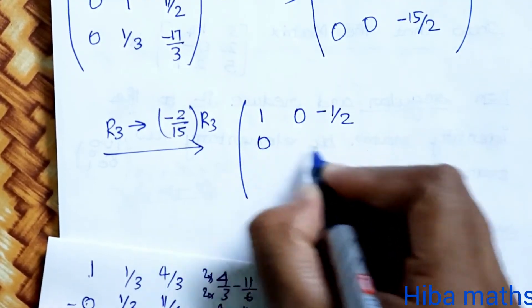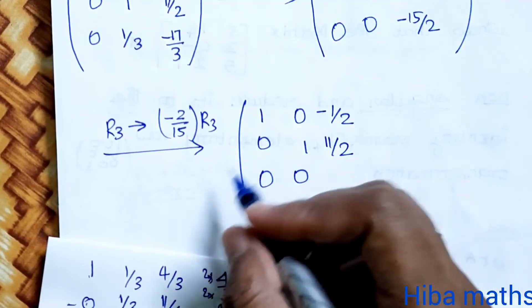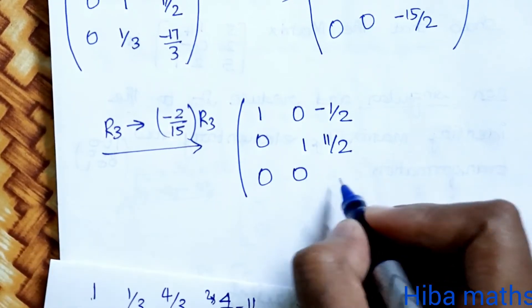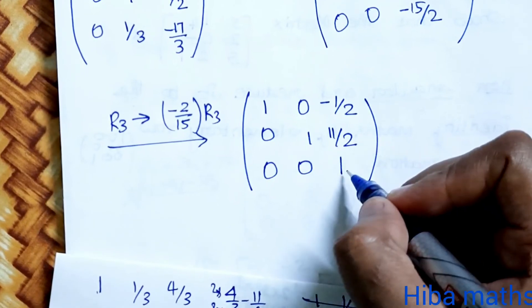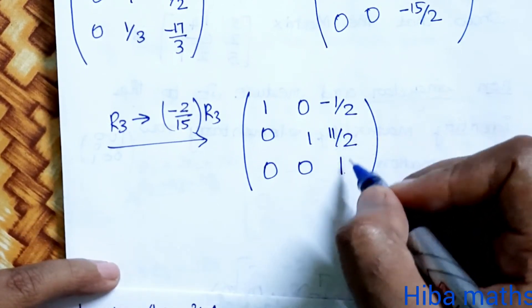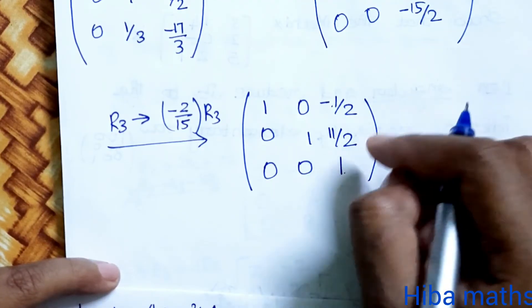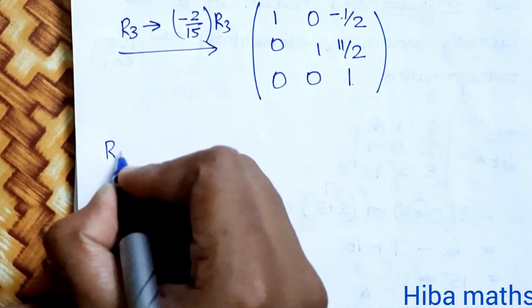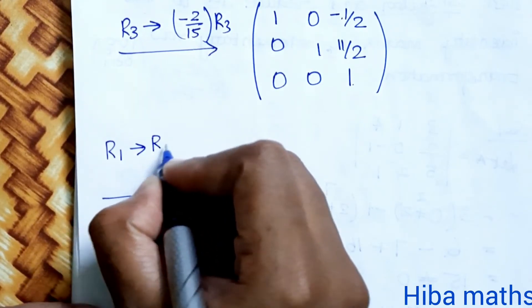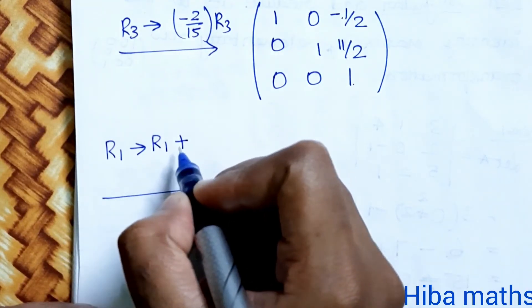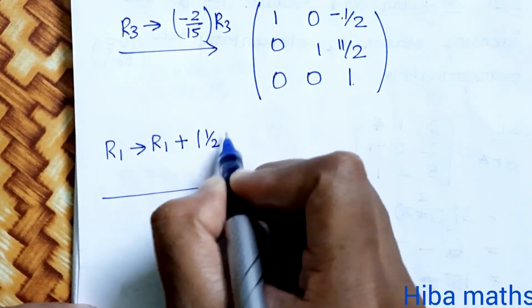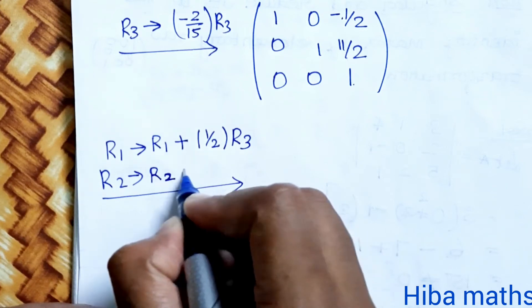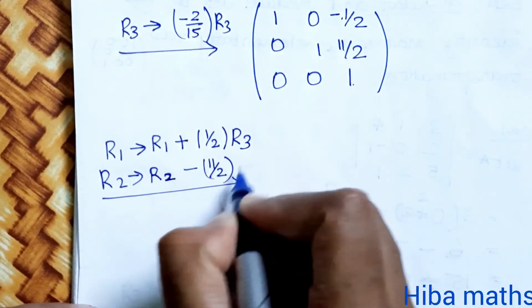After R3 is scaled, we have [1, 0, -1/2 / 0, 1, 11/2 / 0, 0, 1]. Now R1 changes to R1 plus 1/2 times R3, and R2 changes to R2 minus 11/2 times R3, in order to eliminate the third column entries in rows 1 and 2.